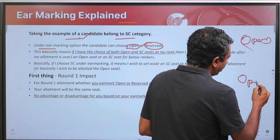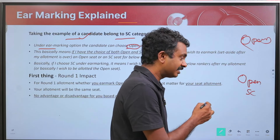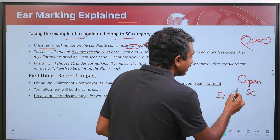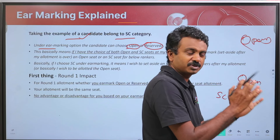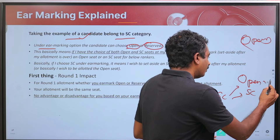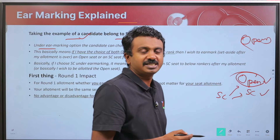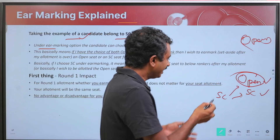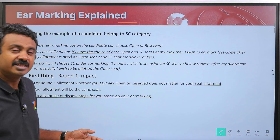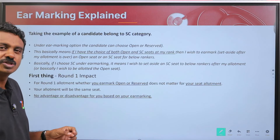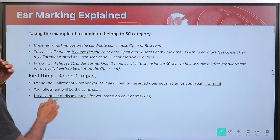What happens usually in All India counselling is that if an SC category candidate has a first choice available in an open seat, automatically the open seat is allotted. But in Maharashtra, where ear marking is applicable, the candidate can possibly choose which seat is allotted or which seat is actually ear marked.